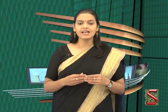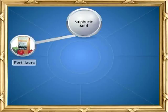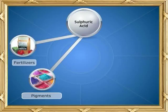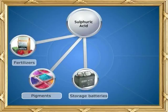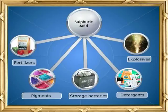So far we have discussed the preparation and the properties of sulfuric acid, and now we will learn its applications. Sulfuric acid is used in the manufacturing of fertilizers, pigments, storage batteries, detergents, and explosives.